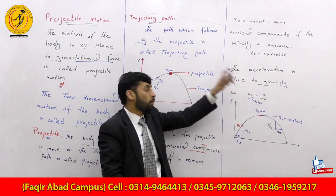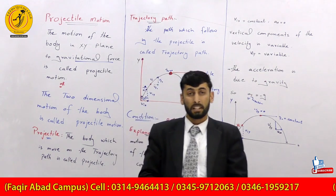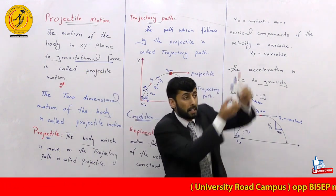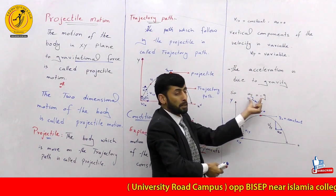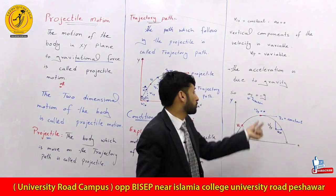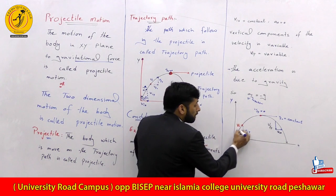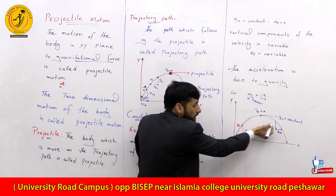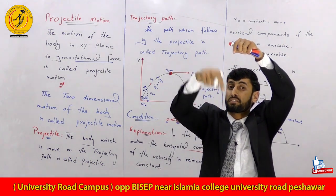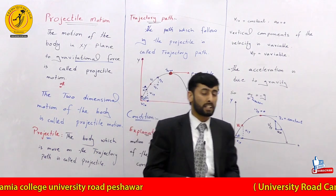The acceleration along the y-axis is ay. The acceleration due to gravity is ay, which is equal to minus g. The negative sign represents the direction of acceleration, which is directed toward the ground. We call this acceleration due to gravity. The minus g value means the acceleration is directed downward.